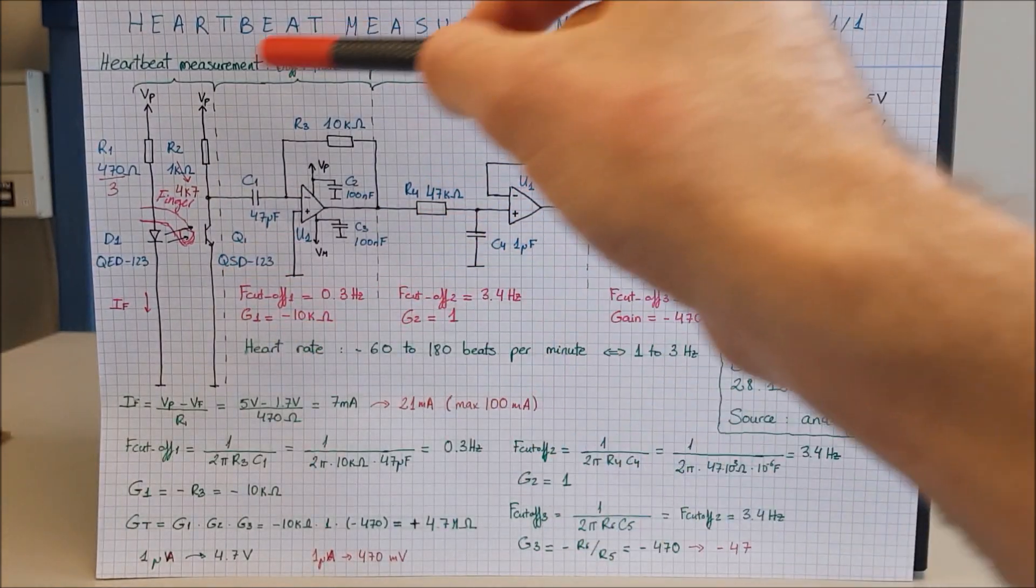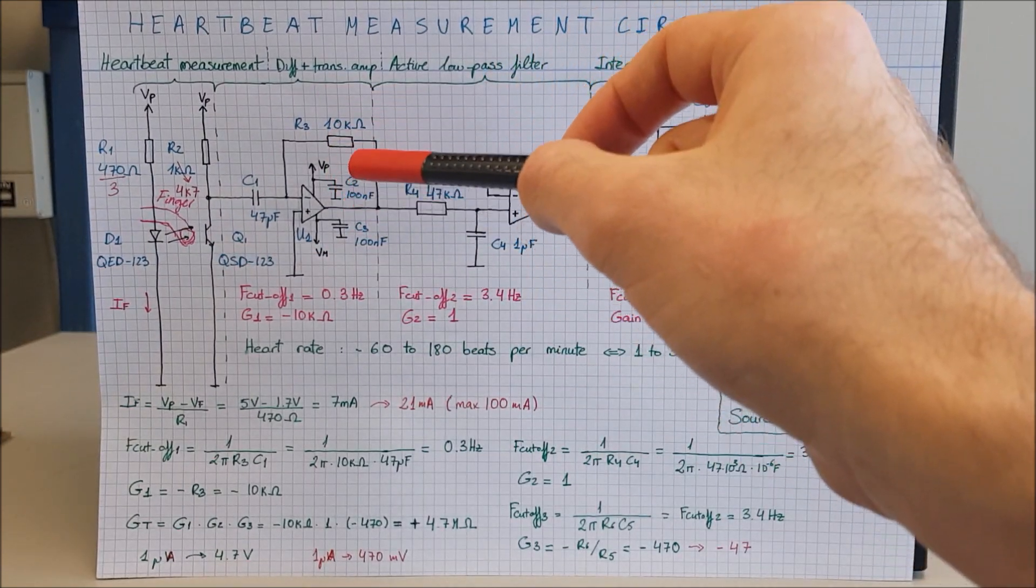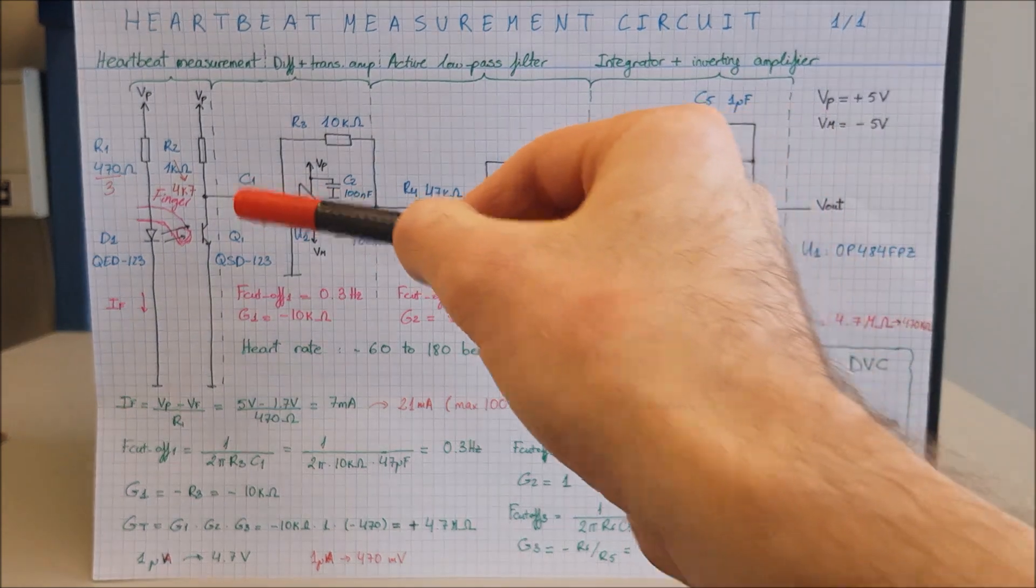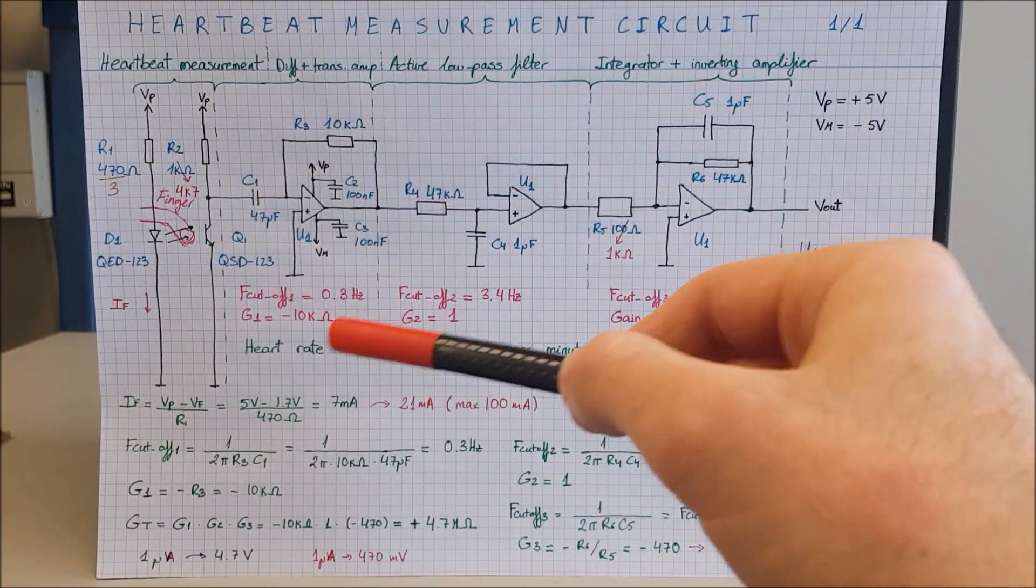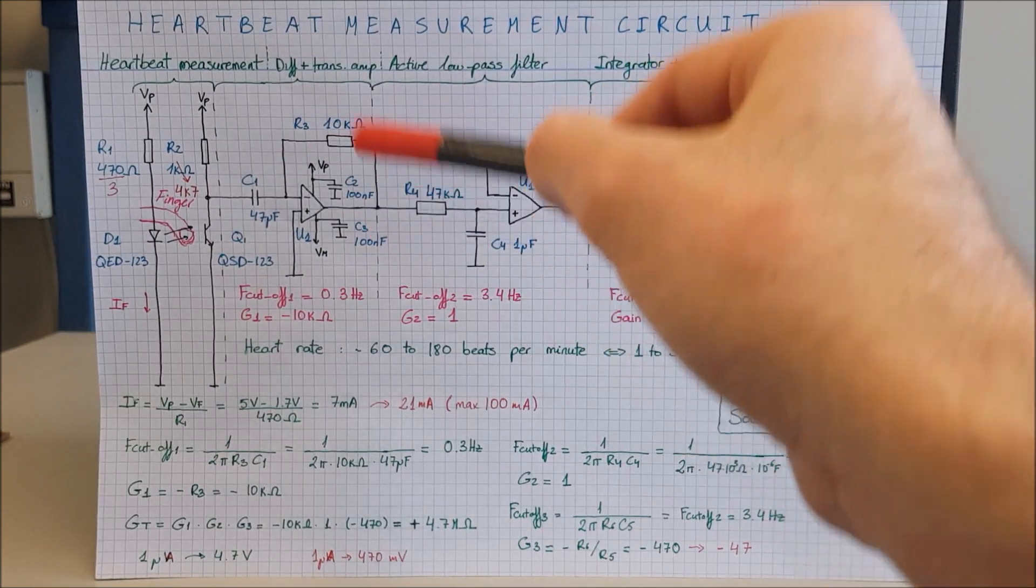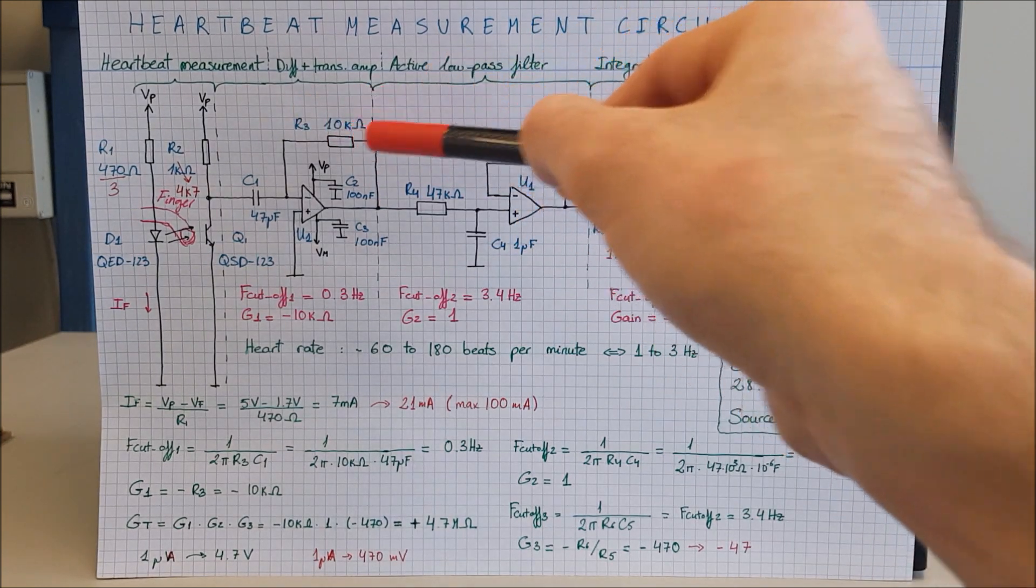We want to amplify the signal because this is tiny so we use an amplifier. This is known as a trans-impedance amplifier. It takes a current flowing through C1 and gives you a voltage output. From current to voltage, and the gain is minus R3, so minus 10 kilo ohms.